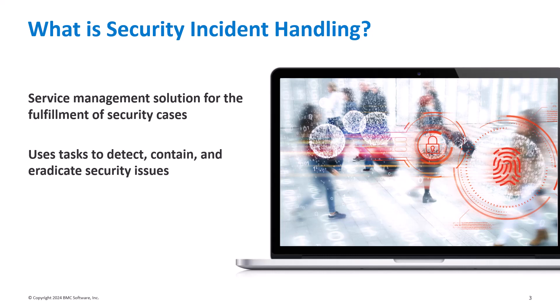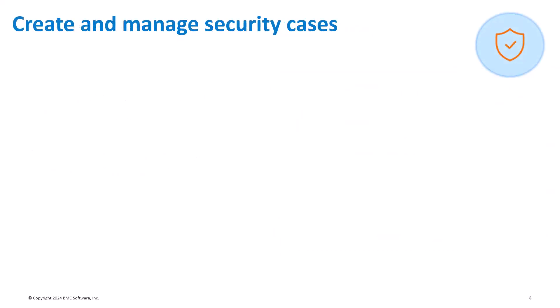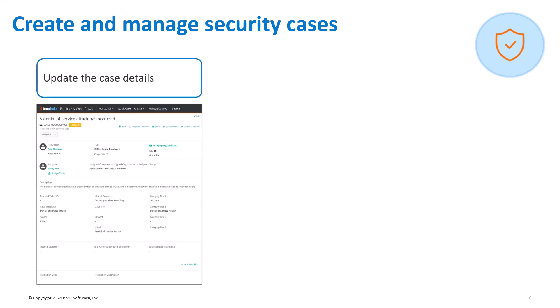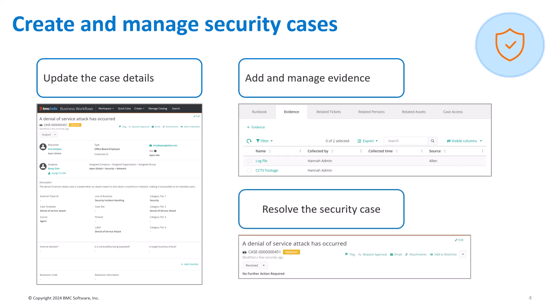Let's look at the core capabilities of BMC Helix for Security Incident Handling. With the Security Incident Handling line of business, create security cases such as phishing attack or confidential data exposure in BMC Helix business workflows. You can manage security cases seamlessly by using runbooks, add evidence and maintain evidence log, and resolve cases by adhering to cybersecurity standards.